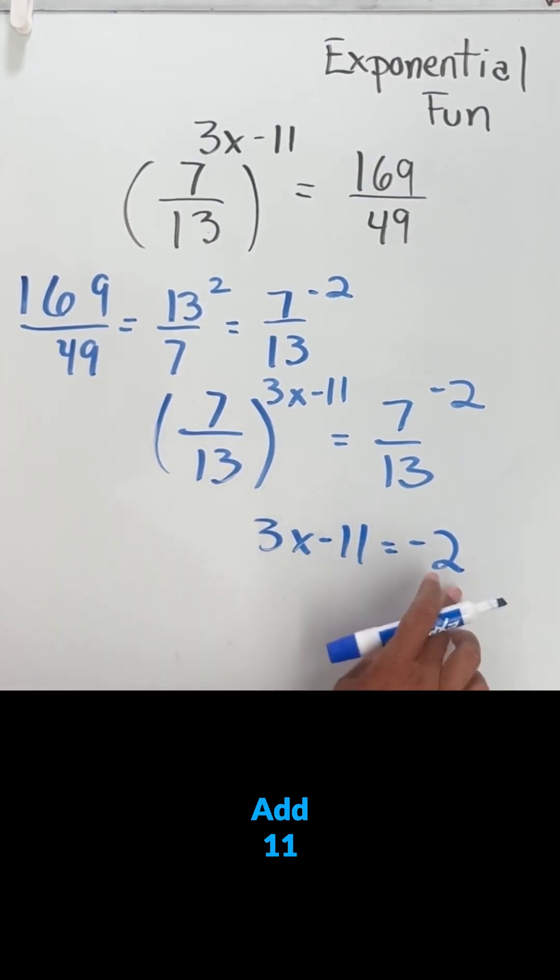Set them equal, add 11 to both sides. That gives me a 9. 3x equals 9. And then I'll just have x equals 3 when I divide by 3.